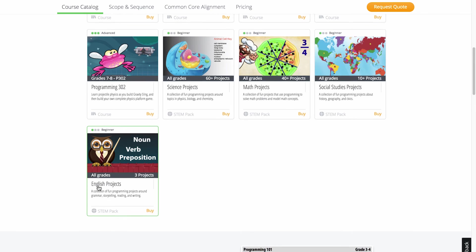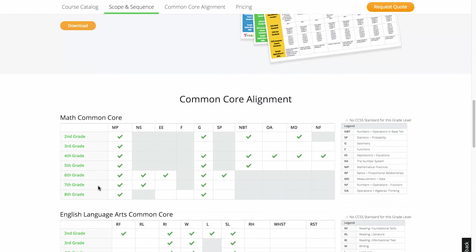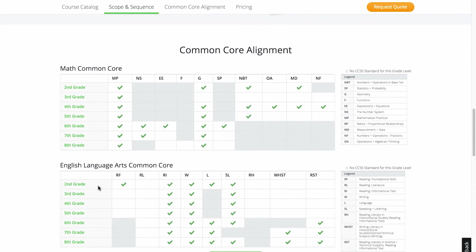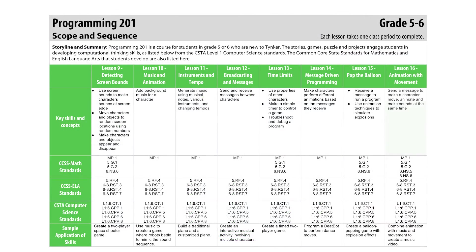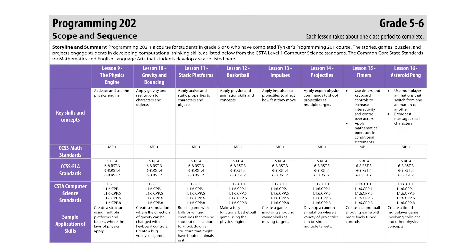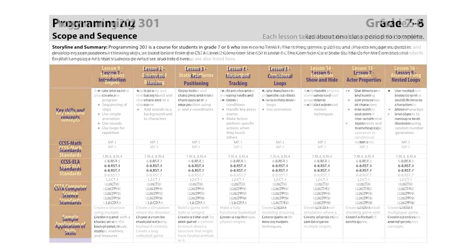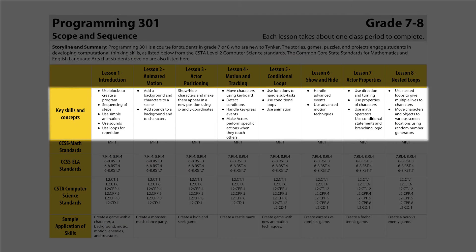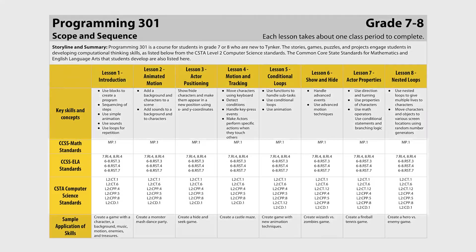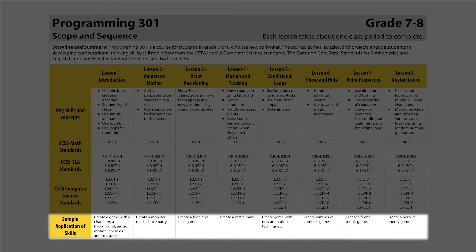Our curricula is aligned with Computer Science Teachers Association standards and Common Core State standards for English language arts and mathematics. You can see the specific standards addressed in each lesson in the scope and sequence documents. This document describes the key skills and concepts, the relevant standards, and a sample application of skills for each lesson.